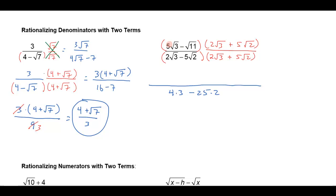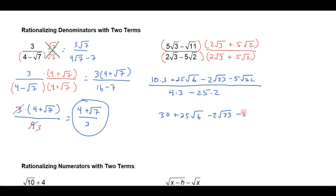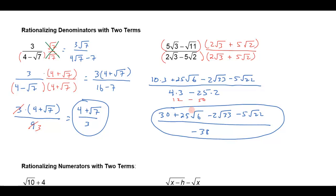Notice that I did get rid of the radical in the denominator. Now the numerator — that's something else. In the numerator I'm going to get 10 times 3, so 10 square root of 3 times square root of 3 is 3. The outers would give me 25 square roots of 6. The inners would give me a negative 2 square roots of 33. And the last ones would give me minus 5 square roots of 22. I don't see anything that's going to combine in the numerator, so I'm going to get 30 plus 25 square roots of 6 minus 2 square roots of 33 minus 5 square roots of 22, all over 12 minus 50 — which is negative 38. Notice I did manage to get rid of the radical in the denominator, but that sure messed up the numerator.